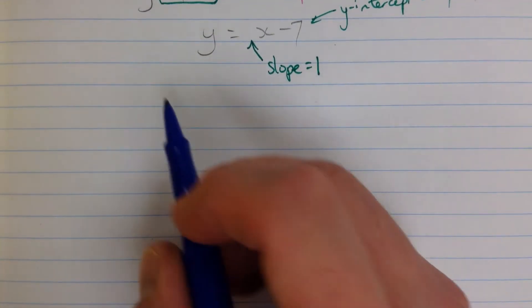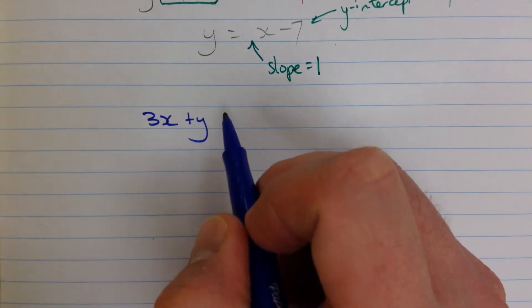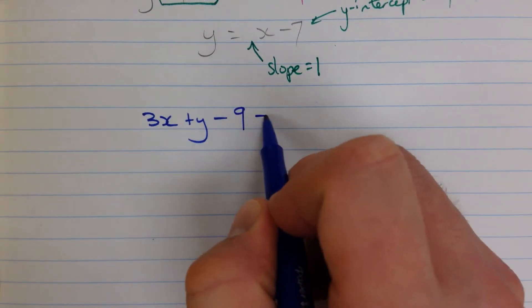Alright, let's do another one. How about 3x plus y minus 9 equals 0?